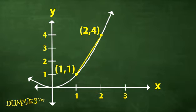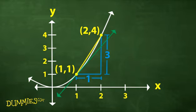From one point to the other, you go over and up, so the slope simplifies to 3. But you can see that this line is steeper than the tangent line. A tangent line is a line that intersects a differentiable curve at a point where the slope of the curve equals the slope of the line.